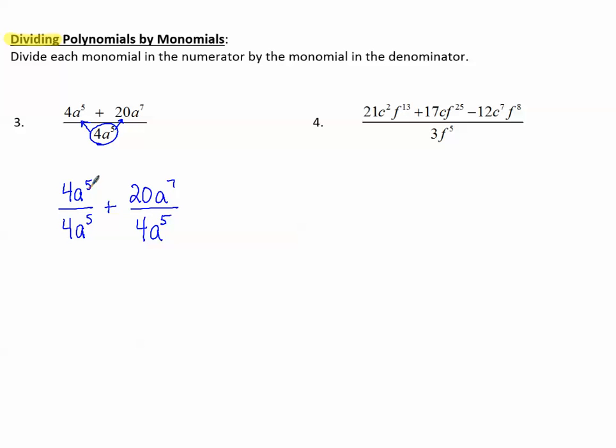Well, 4a⁵ divided by 4a⁵ is 1. So that first term makes 1 plus 20 can divide by 4. 4 goes into itself once and into 20 five times. And then we remember our laws of exponents.